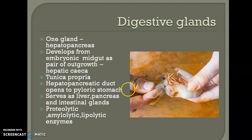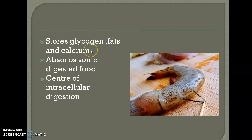The hepatopancreas secretes proteolytic enzymes needed for the digestion of proteins, amylolytic enzymes needed for the digestion of carbohydrates, and lipolytic enzymes needed for the digestion of lipids or fats. It helps in storing glycogen, fats, and calcium, and also absorbs some digested food.